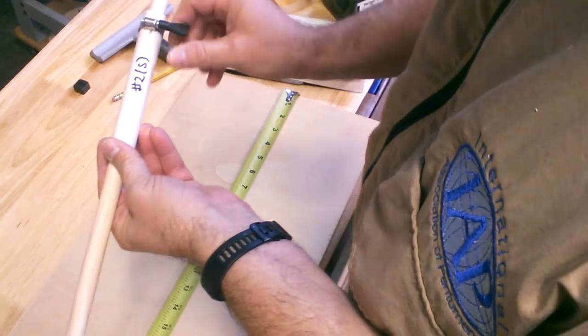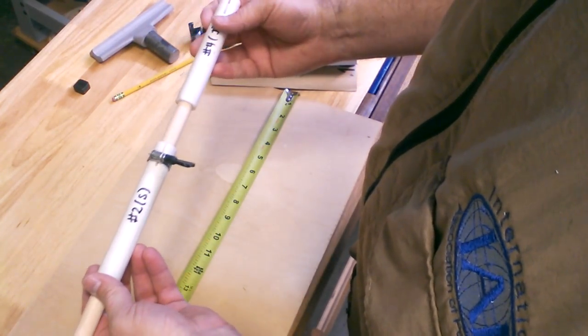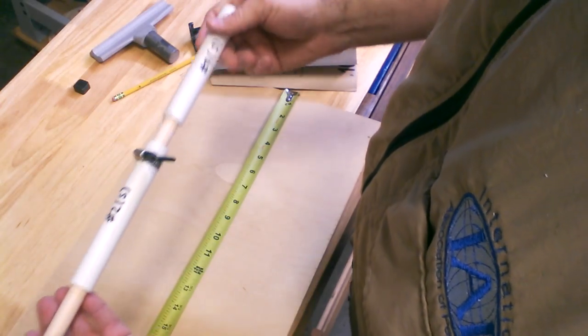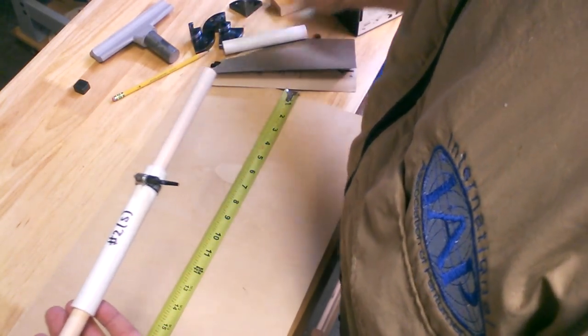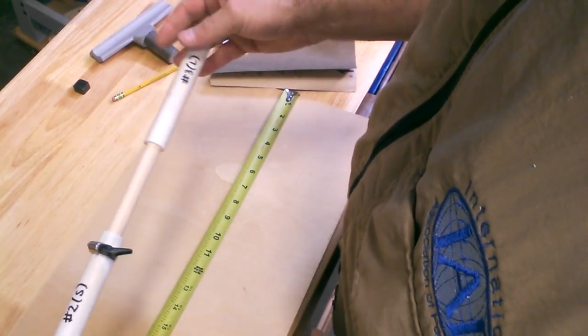One of the things I'm going to do is, again, each of these is interchangeable. Since I made this dowel the same thickness, all of these will fit on here. So now I have my different cheater sticks, if you will.